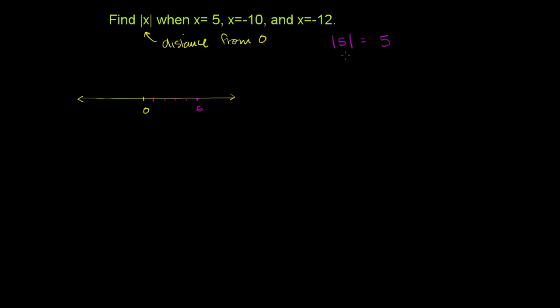Now, I think you already get to see, this is a pretty straightforward concept. Now let's do something a little more interesting. Absolute value of negative 10, or the absolute value of x when x is equal to negative 10. So let's just put negative 10 in for x. This is the distance that negative 10 is from 0.